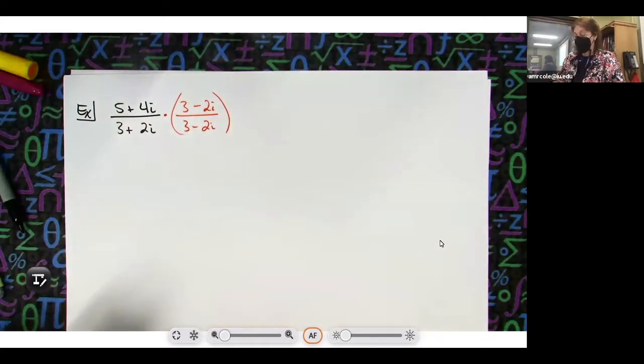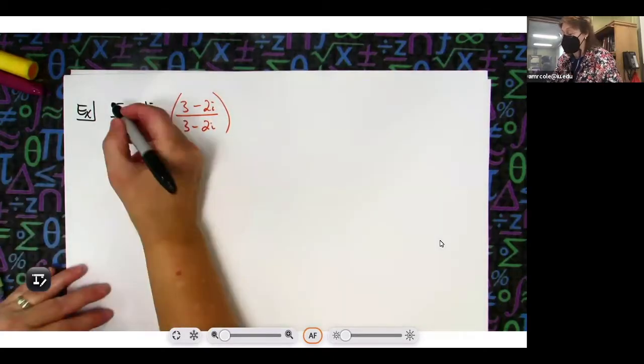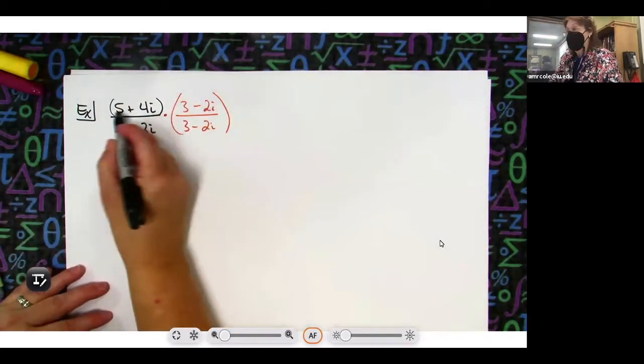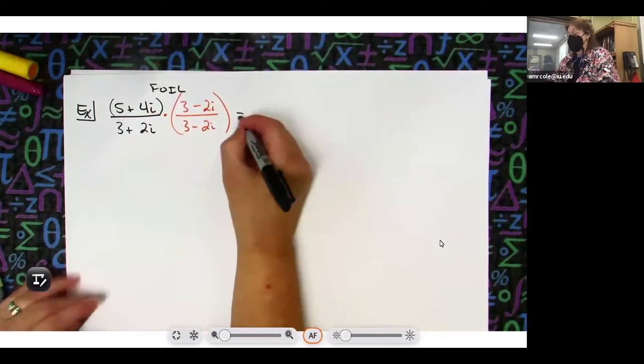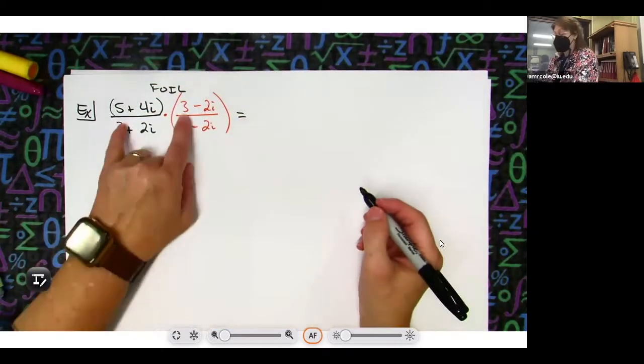On the top I have a binomial over here, I have a binomial right here. I have to foil out that top, so we're gonna do it and I'll show all the steps.